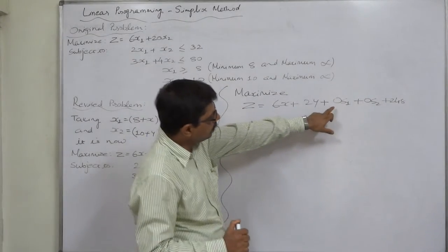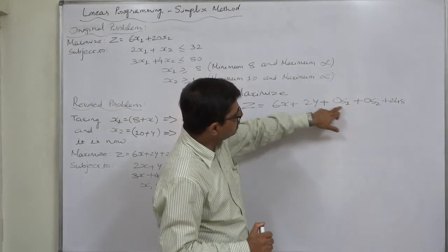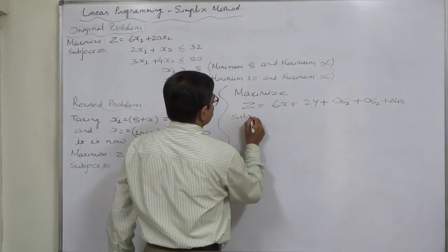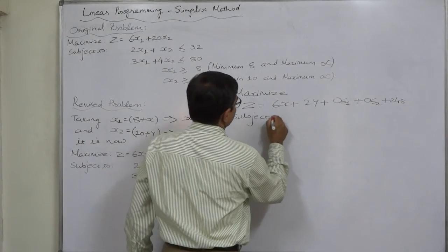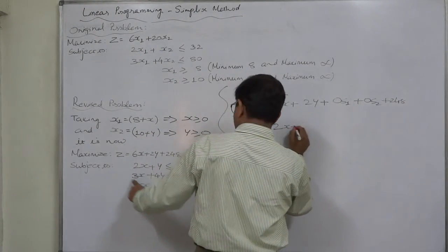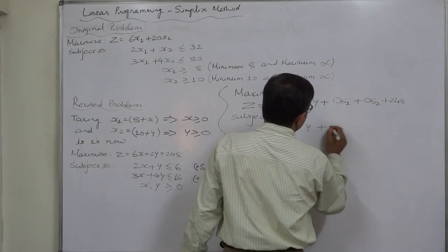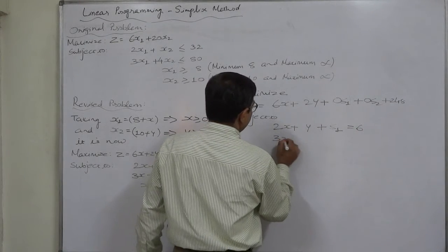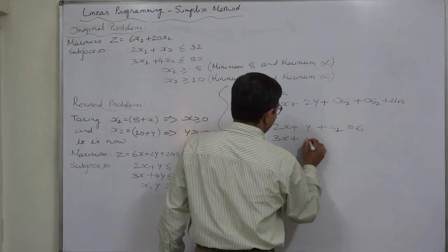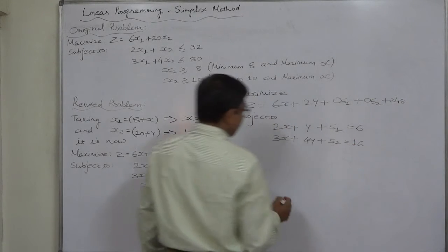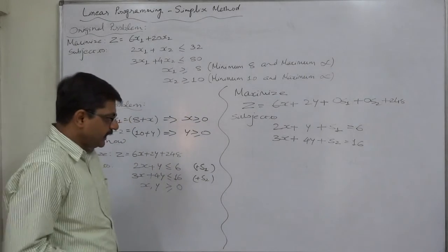Hence, we have to take coefficient of slack variable as 0 in the objective function. Subject to 2x plus y plus s1 equals 6 and 3x plus 4y plus s2 equals to 16.